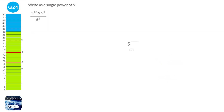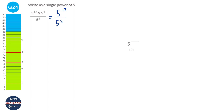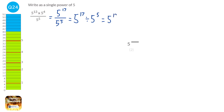The rules of indices say that when we multiply two numbers with the same base, we add the powers. So we do 5 to the power of 13 plus 4, which is 17, over 5 to the power of 5. A fraction is a division, and when we divide numbers with the same base we subtract the powers. So we do 17 take away 5, which is 12, giving 5 to the power of 12.